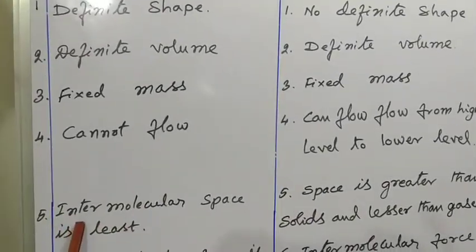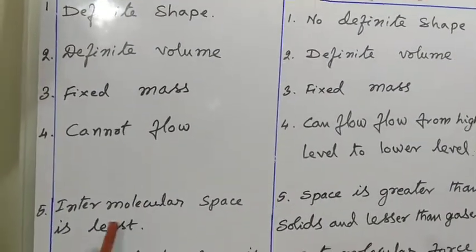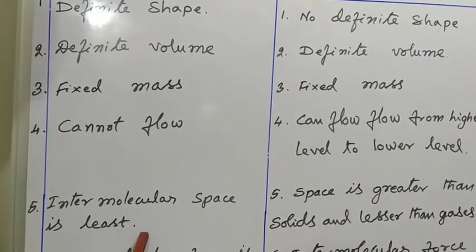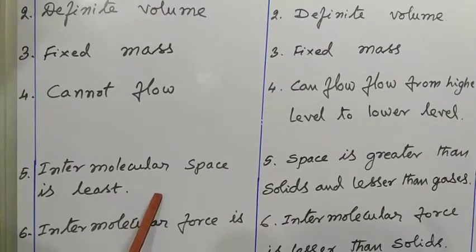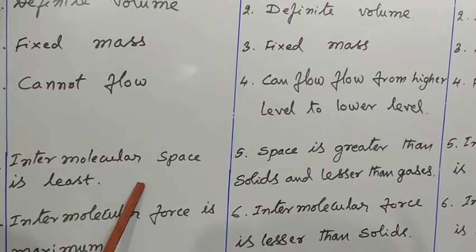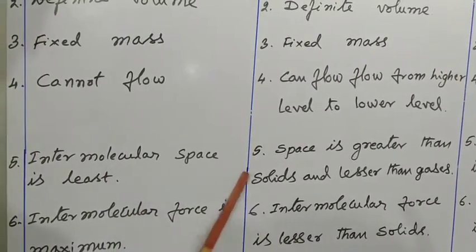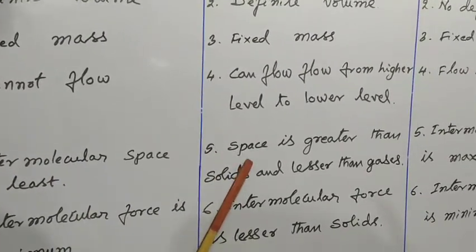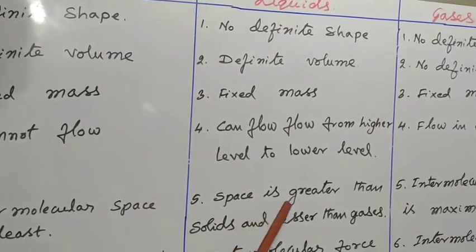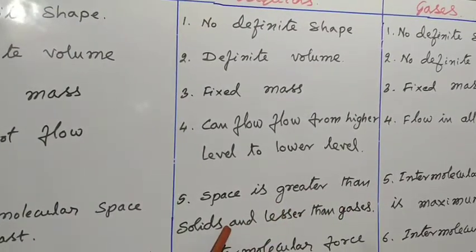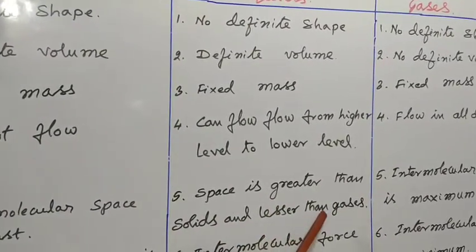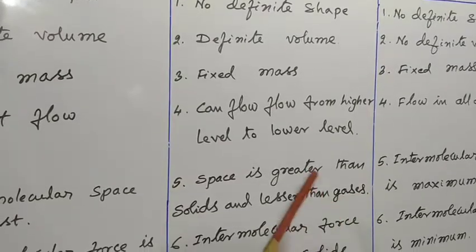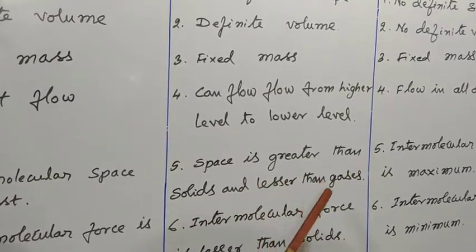Fifth property, intermolecular space. In solids, space is very less, that's why it has a fixed shape. In liquids, space is greater than solids and lesser than gases. In gases, intermolecular space is maximum.